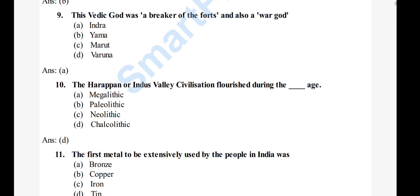Question 11: The first metal to be extensively used by the people in India — options: A) Bronze, B) Copper, C) Iron, D) Tin. The right answer is option B, Copper.